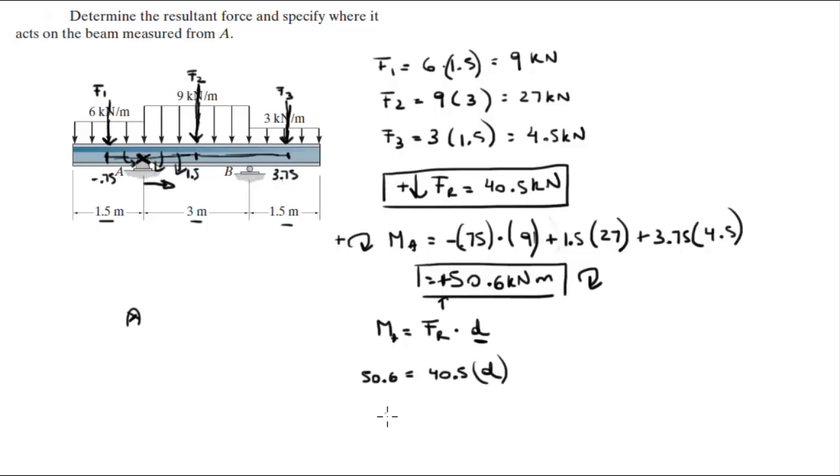And it's going to be this distance D. So the moment is 50.6, the resultant force is 40.5, and D is the variable we're looking for, so D comes out to be 1.25 meters. So it means that the resultant force acts 1.25 meters to the right of A.